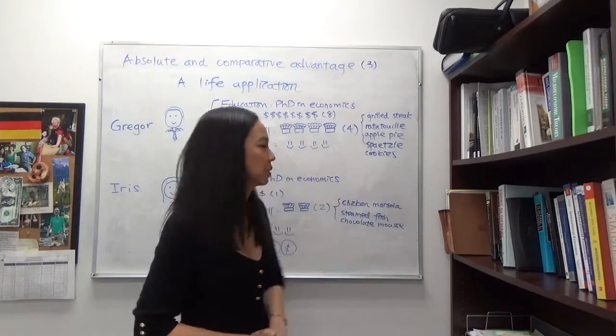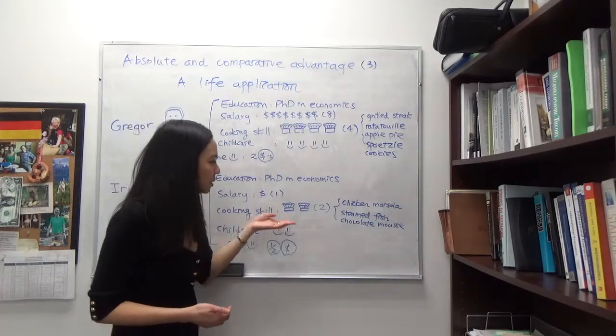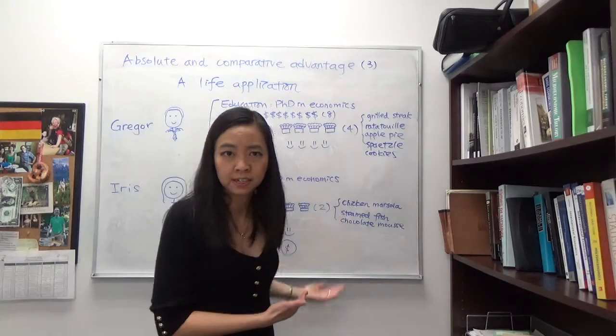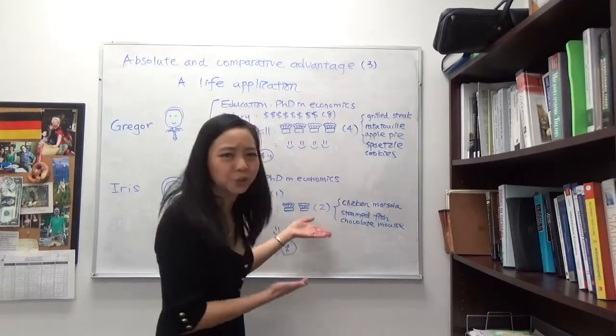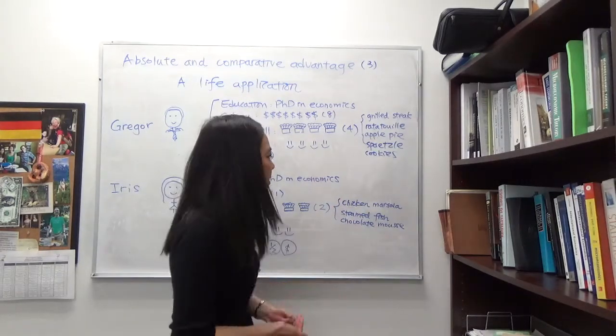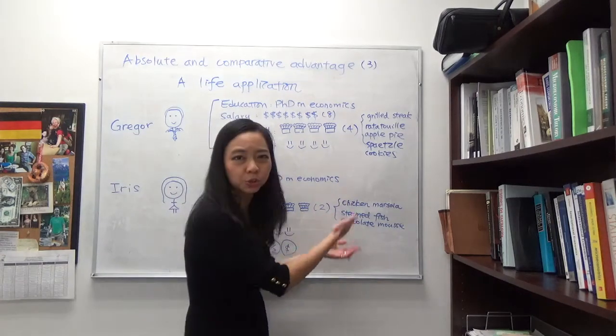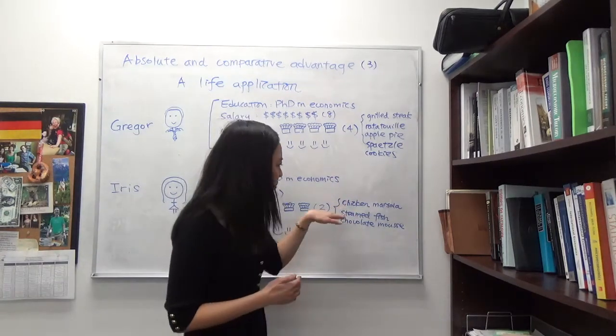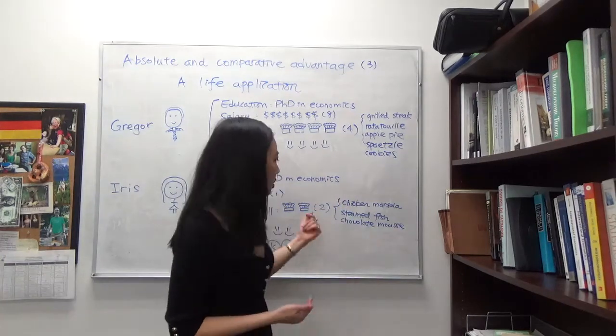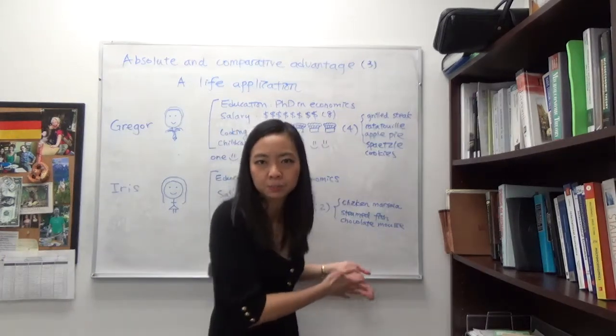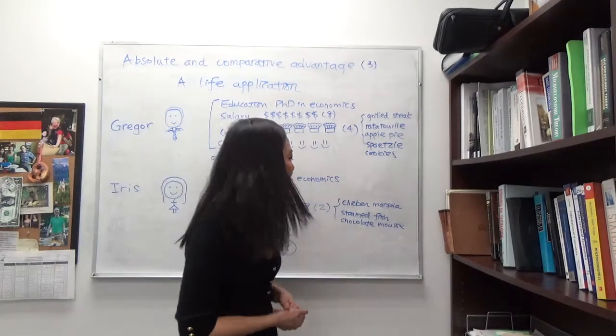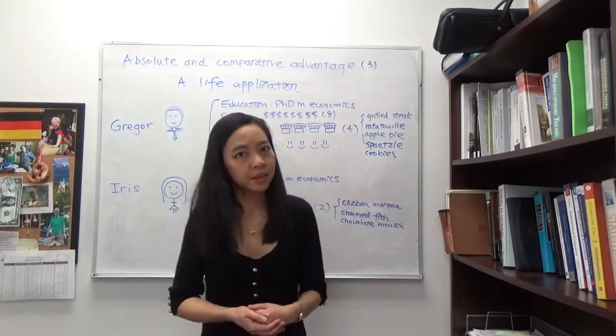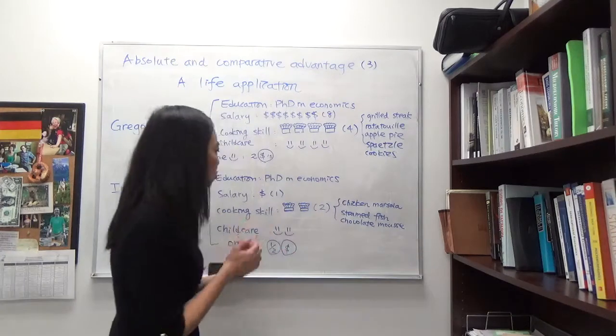Iris, because she was growing up in Asia and was only studying dance at that time, didn't do any chores and only knew how to study. After she got married, she managed to cook several dishes, but they're not great dishes. She knows how to make chicken masala and steamed fish, which is a little bit boring to the kids, but they try to eat it. The best thing she can make is chocolate mousse. So we award Iris with two chef hats.